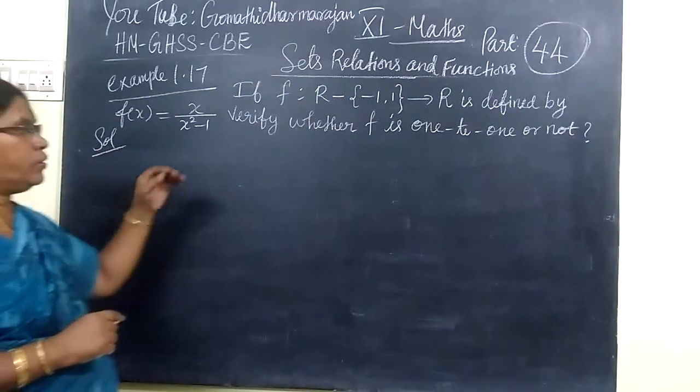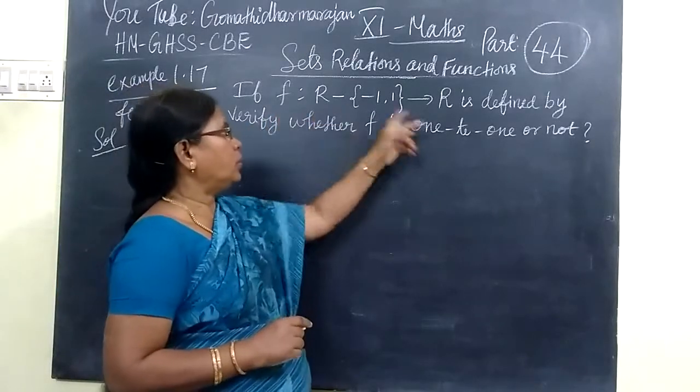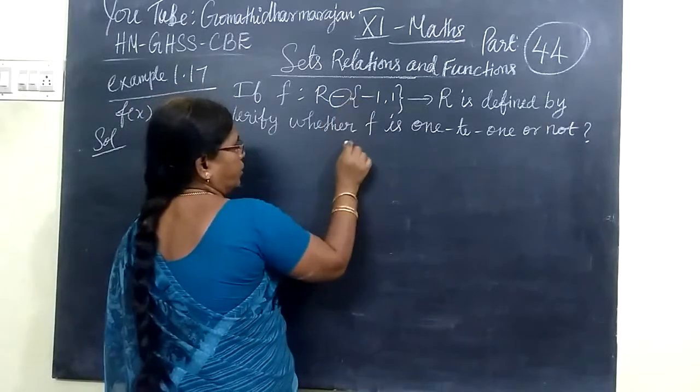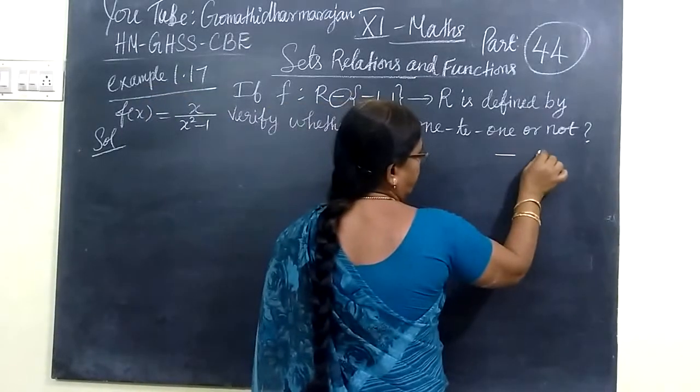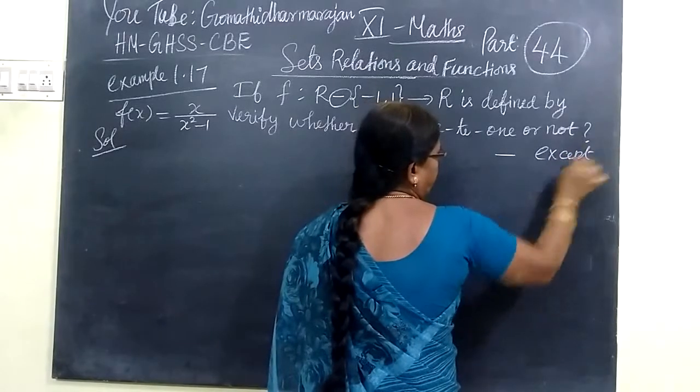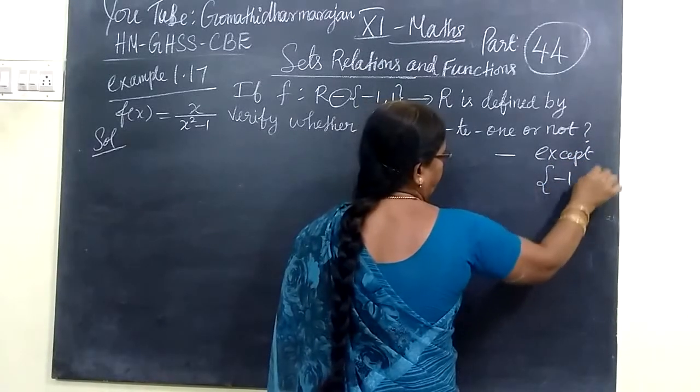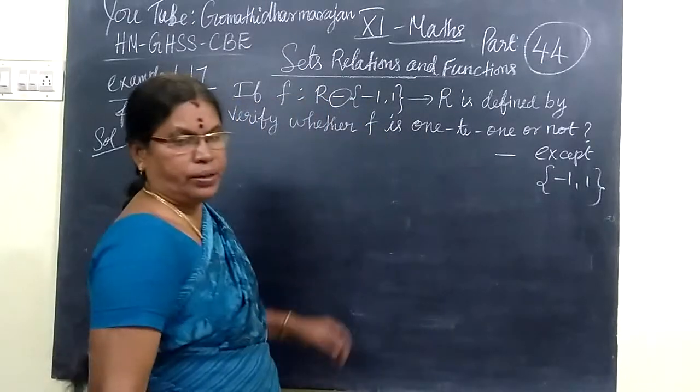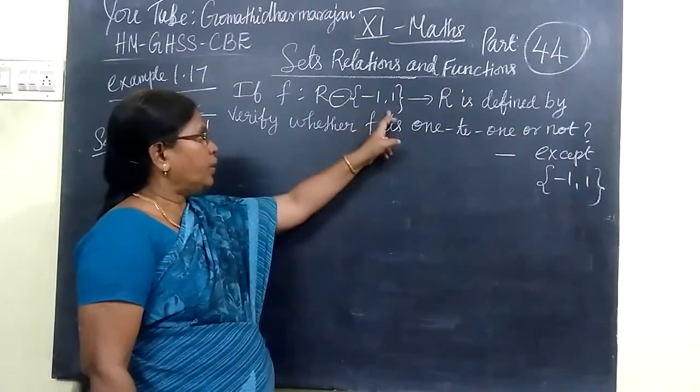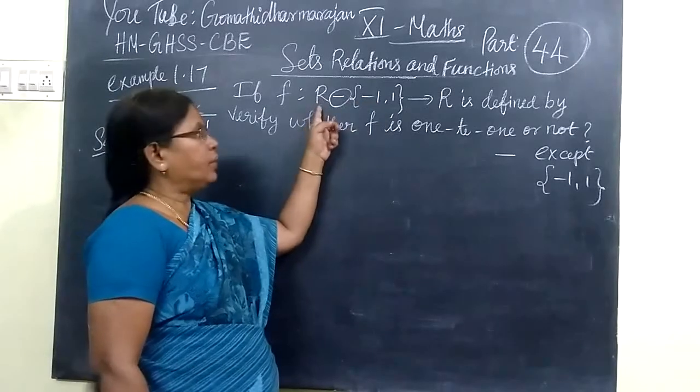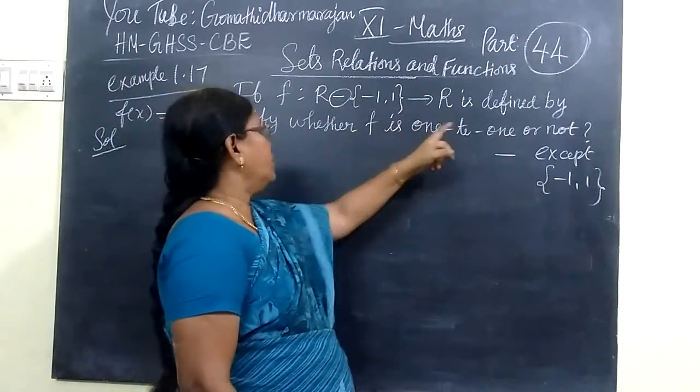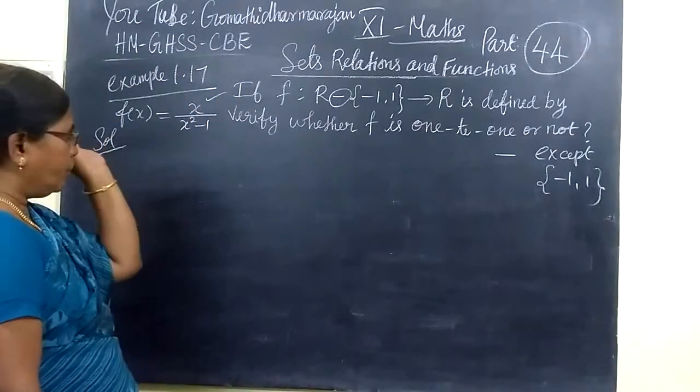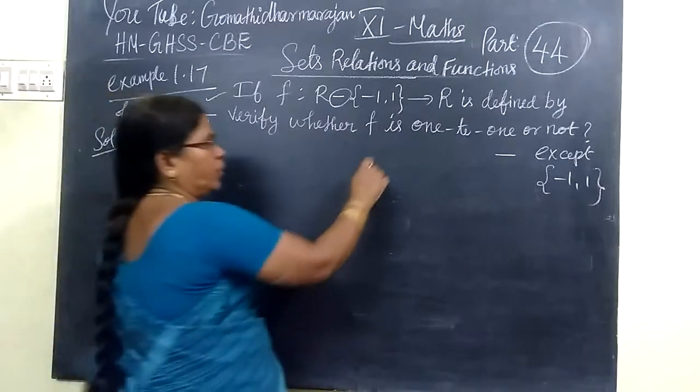See the first one. It is a CK function from R to R except {-1, 1}. We divide R. It is f(x) = x/(x²-1). Verify whether f is 1-to-1 or not.